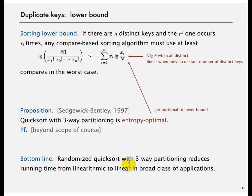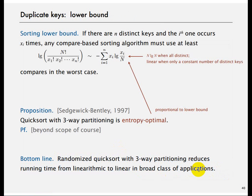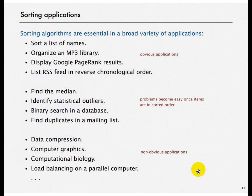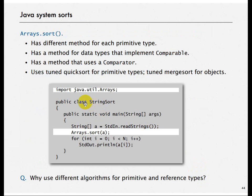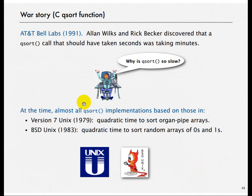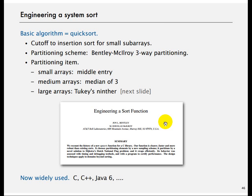This approach is entropy optimal — order N log N. The bottom line is that randomized Quicksort with three-way partitioning reduces running time from linearithmic to linear in a broad class of applications. There is also a notable story about how this was discovered when doing Quicksort with many duplicates, and there is a paper on the three-way partitioning technique.